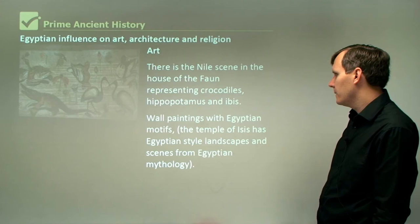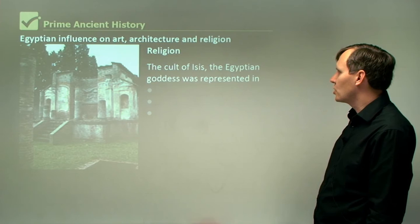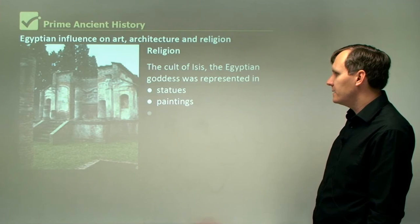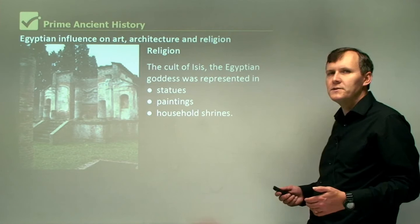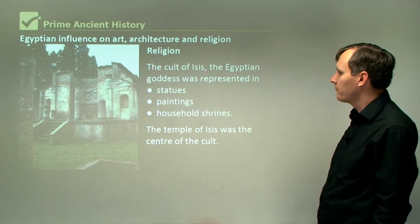In religion, the cult of Isis, the Egyptian goddess, was represented in statues, paintings, and household shrines. So you have the main temple dedicated to Isis, but there's other evidence of the worship of Isis through statues, paintings, and household shrines. The Temple of Isis was the centre of this cult and worship.